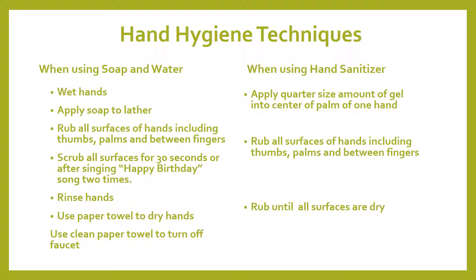When using soap and water, wet your hands, apply soap to a lather, and rub all surfaces of your hands including your thumbs, your palms, and between your fingers. Scrub all surfaces for 30 seconds, or for the amount of time it takes to sing Happy Birthday two times. Rinse your hands, being careful not to splash, and use clean paper towels to dry your hands. Use a clean paper towel to turn off your faucet.